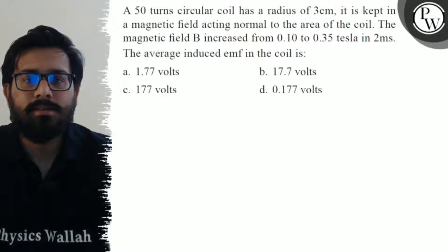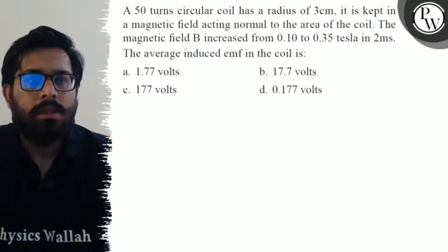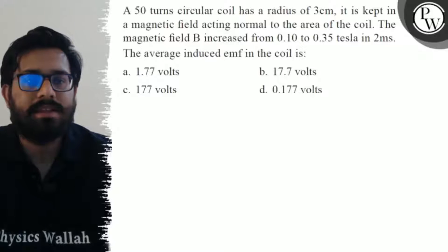A 50 turns circular coil has a radius of 3 cm. It is kept in a magnetic field acting normal to the area of the coil. The magnetic field B increased from 0.10 to 0.35 tesla in 2 milliseconds.